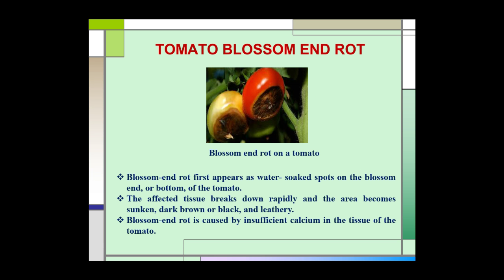Tomato blossom end rot first appears as water-soaked spots on the blossom end or at the bottom of the tomato. The affected tissue breaks down rapidly and the area becomes sunken, dark brown or black, and leathery. This blossom end rot in tomato is caused by insufficient calcium in the tissues of the tomato.